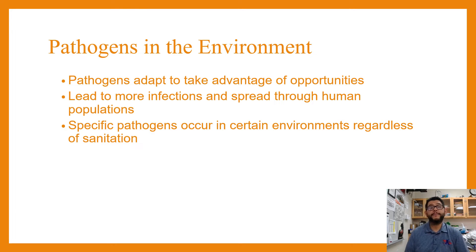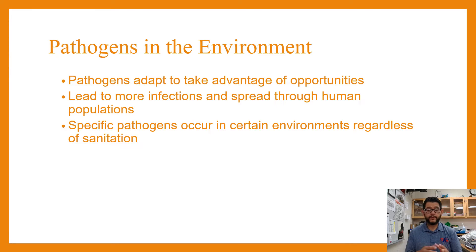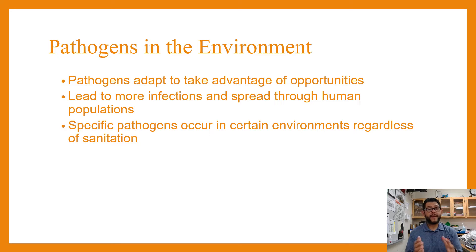Pathogens and the environment are going to be classified into three main groups: viruses, bacteria, and protists or other diseases. It's important to know that they lead to infections that can be spread to human populations, so it's going to be one of those density-dependent issues. These specific pathogens can occur in environments regardless of sanitation — they are related to general human populations.